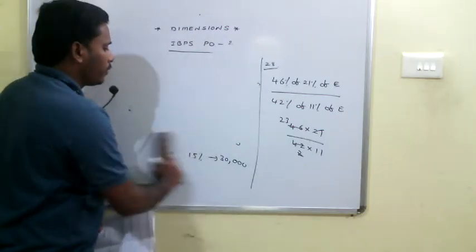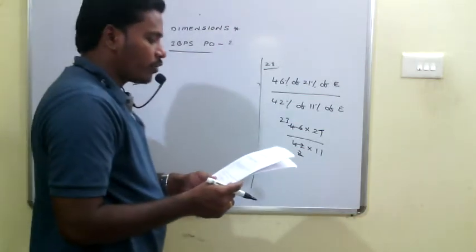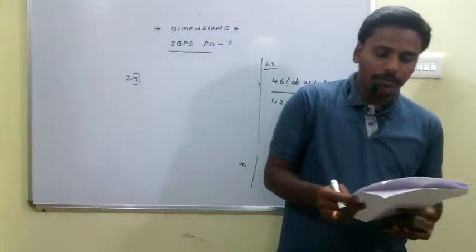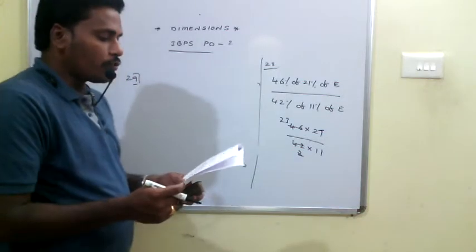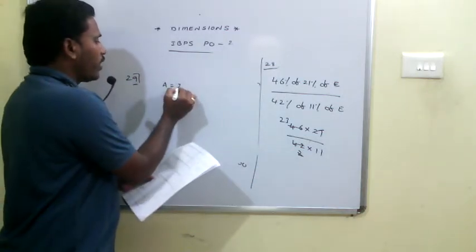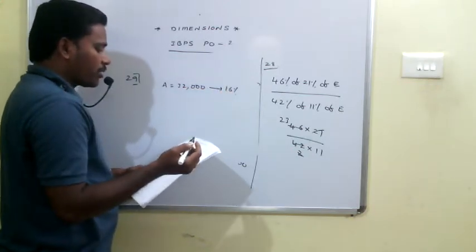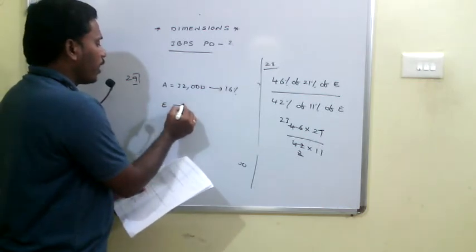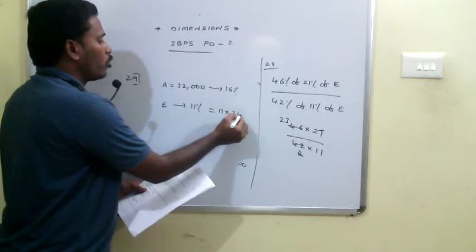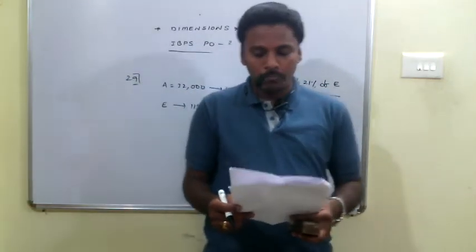Q29: Given male employees in department A are 12,160, from Q26 we know A = 32,000, which corresponds to 16% of total, so 1% = 2,000. Department E has 11% of employees, so the number of employees in E = 11 × 2,000 = 22,000.